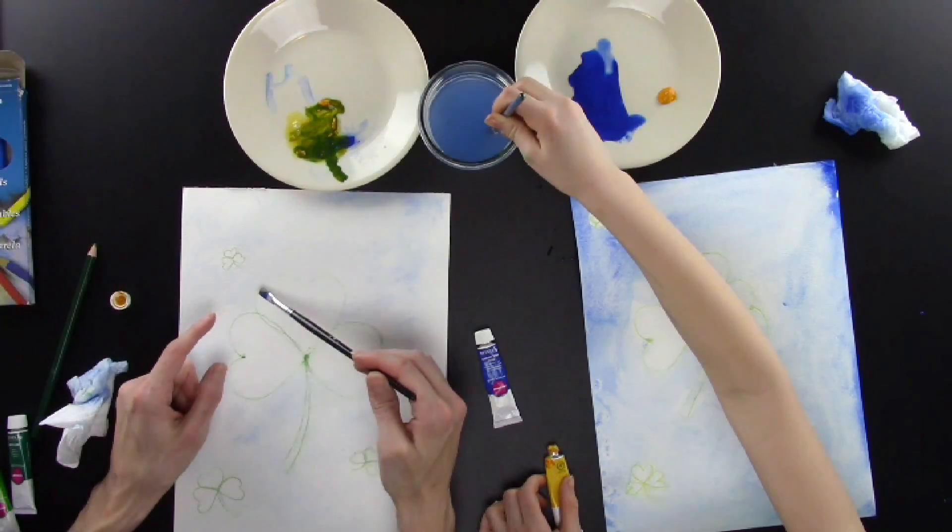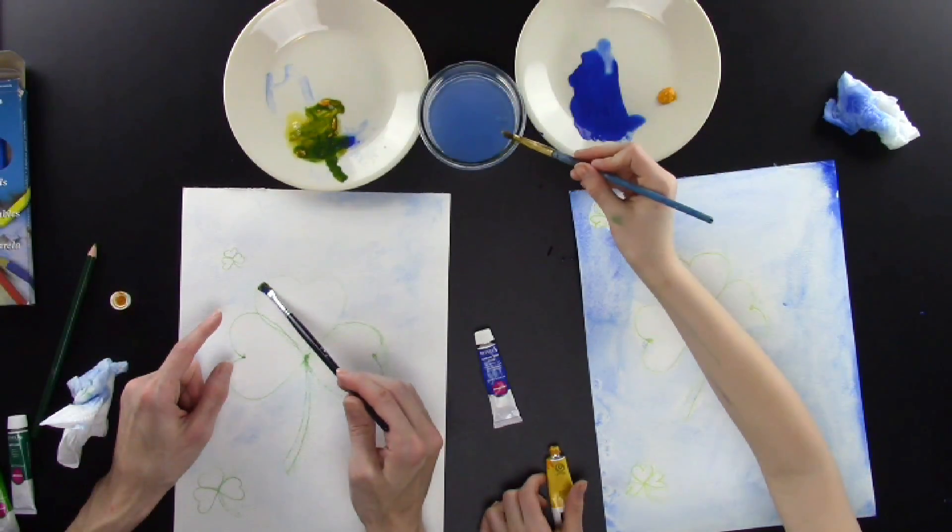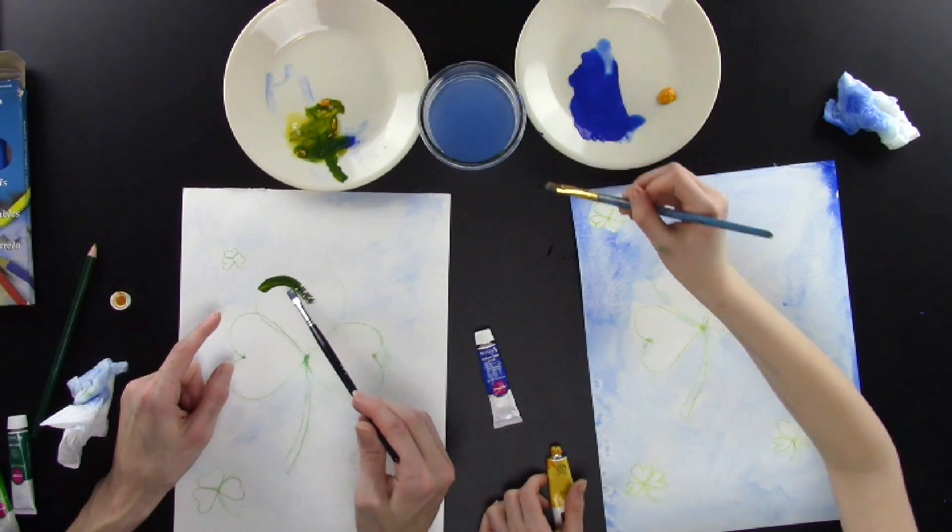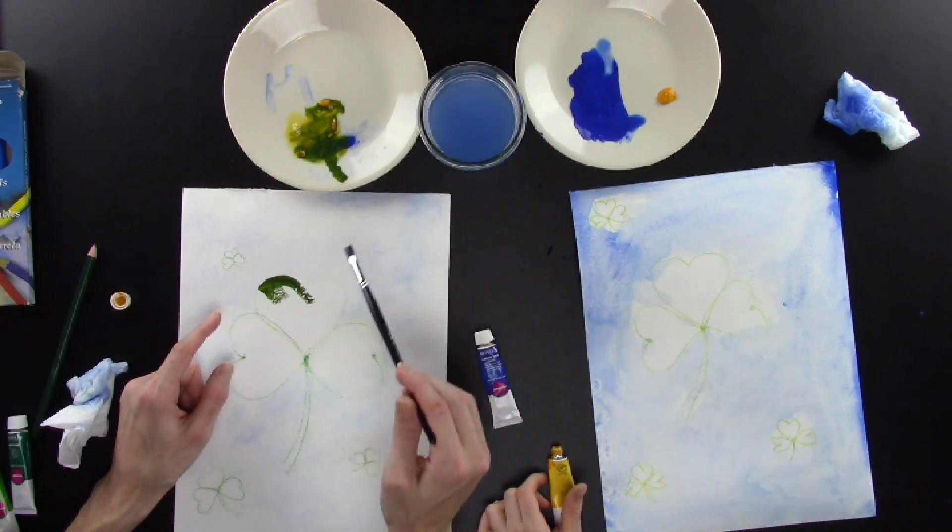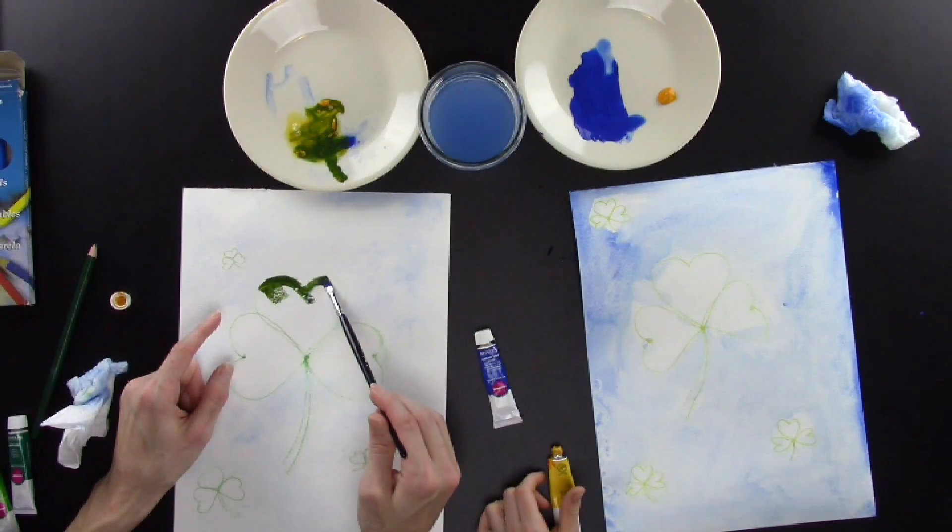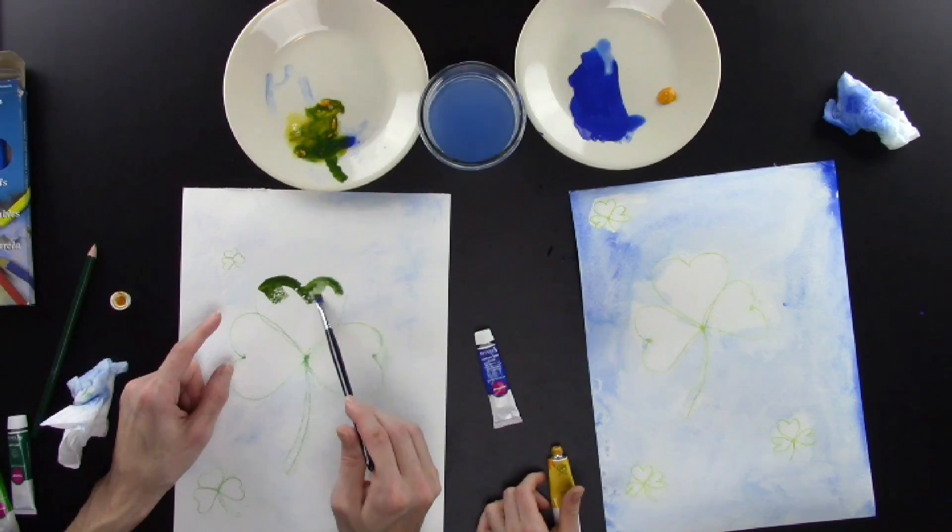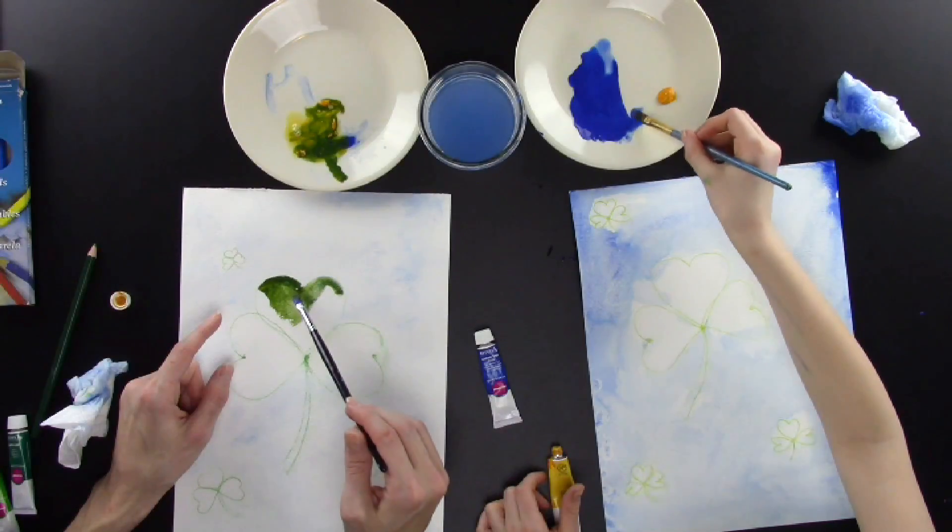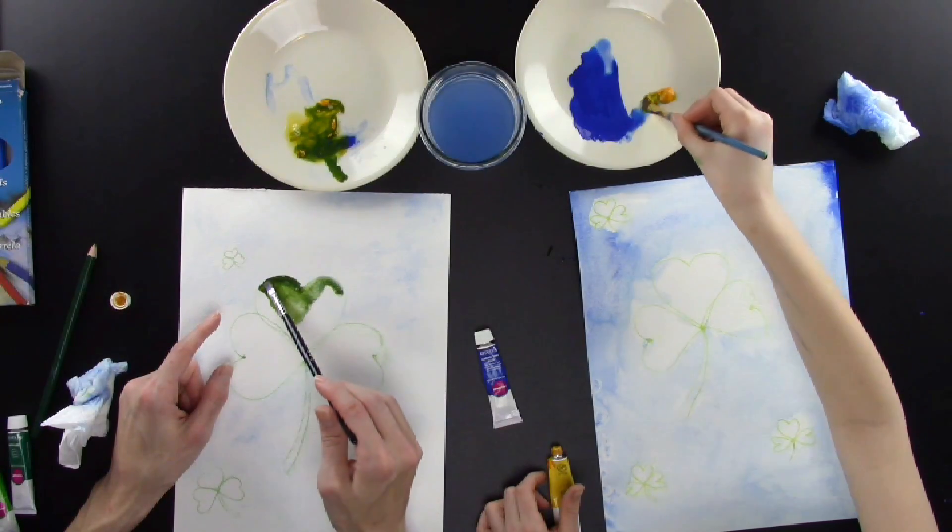I'm going to use the flat of my brush now. Notice how I'm taking the flat of my brush and I'm lining it up with my lines that I drew. This is going to make the lines on the outside of my shamrock very nice and straight, not jiggety-jaggety.